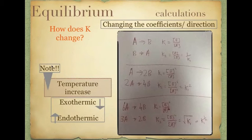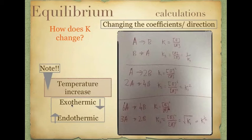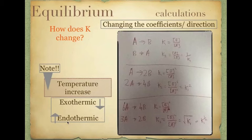The next thing is what happens to K if you change the temperature. Increasing the temperature affects the K value differently depending on whether your reaction is exothermic or endothermic. In an exothermic reaction, increasing the temperature will decrease your K value — you get fewer products than at a lower temperature. For an endothermic reaction, increasing temperature actually increases K — you get more products. This will make more sense when we discuss Le Chatelier's principle as well.